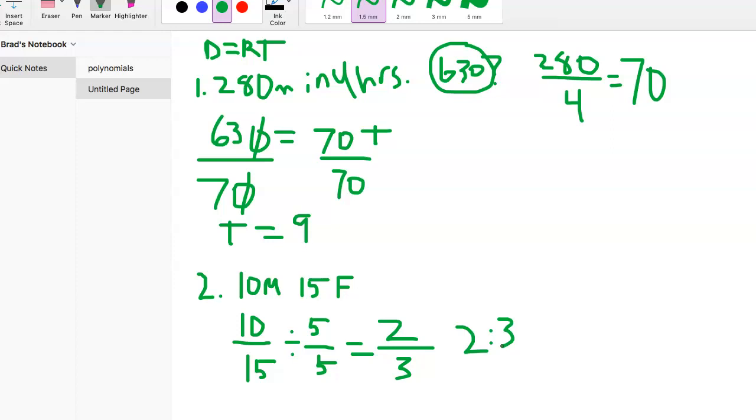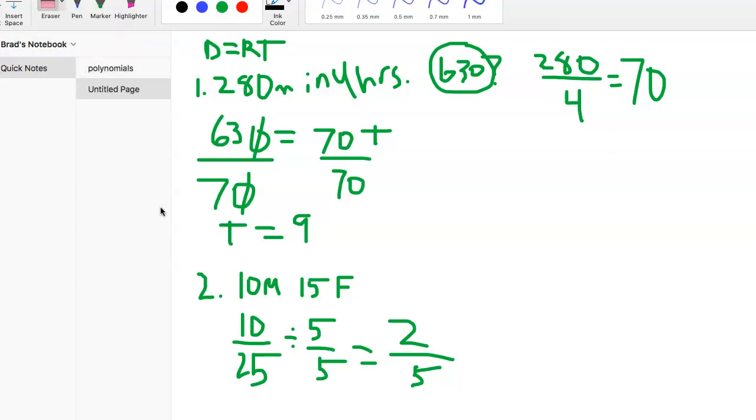That was if the ratio was males to females. Now what if they asked males to the whole class? The whole class has 25 people—10 plus 15. So males to the whole class, we have 10 of 25. Divide each side by 5, and 10 divided by 5 is 2, and 25 divided by 5 is 5. So 2 to 5.